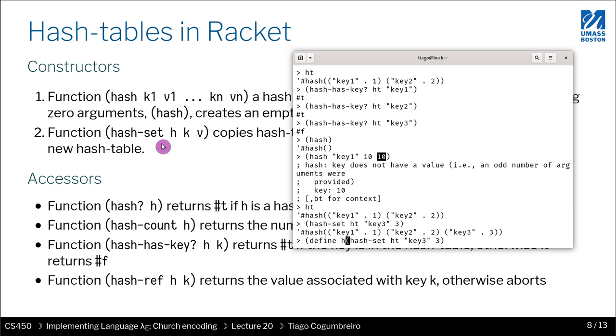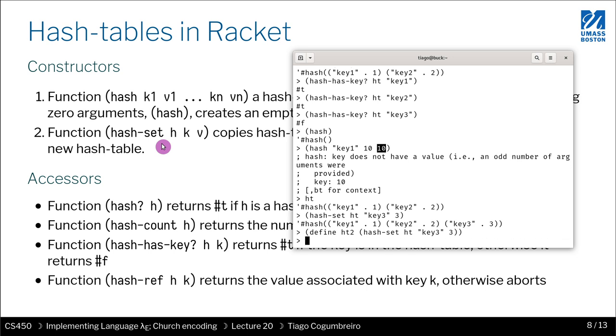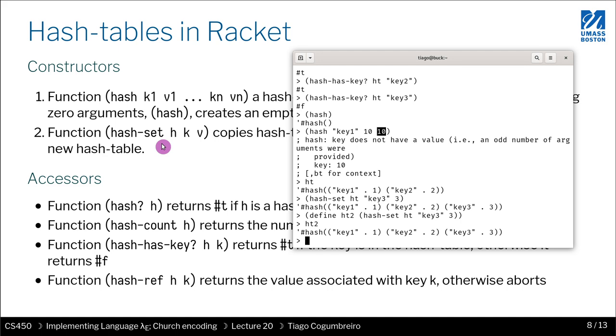So now let's define hash table two, which now has key three associated with it. So let's see the contents of hash table two again, just make sure everything is fine. And indeed, you can find key three there.